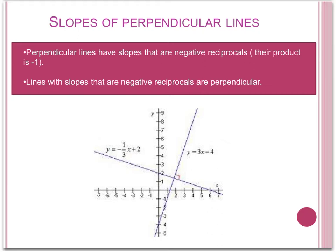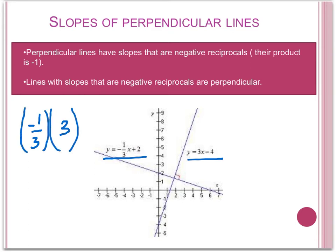For the example below, we see that the slope of the first equation is negative one-third, and the slope for the second equation is 3. To find whether these two lines are perpendicular, we multiply their slopes. Negative one-third times 3 is negative 3 over 3, which is equal to negative 1. Therefore, we know these two lines are perpendicular.